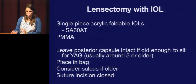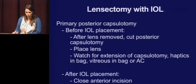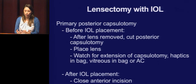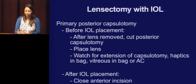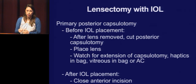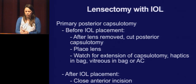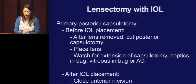Always suture any incision in a child. The primary posterior capsulotomy can be done before IOL placement — remove the cataract, do the posterior capsulotomy, then place the lens in the bag — making sure there's no extension, no vitreous in the bag or anterior chamber. Or you can do it after IOL placement, which is how I do it: put the IOL in, close the anterior chamber, then do a pars plana sclerotomy and go in with your vitrector to do the posterior capsulotomy.